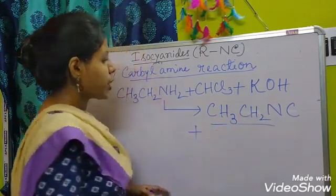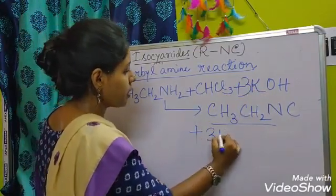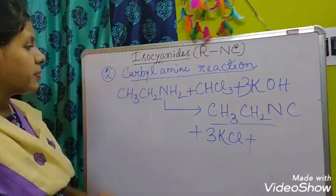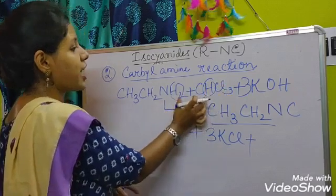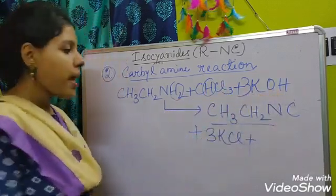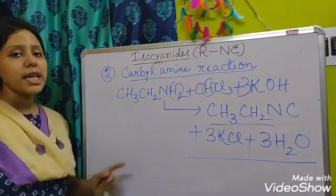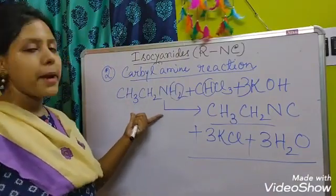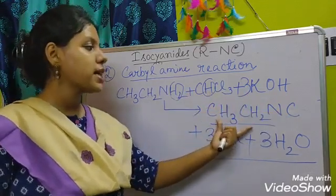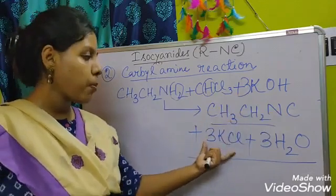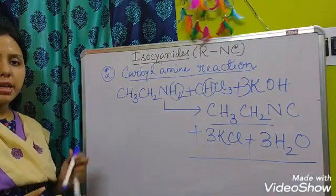The co-products are 3KCl and 3H₂O. After the carbylamine reaction, starting from the primary amine and the alkaline solution of chloroform, it produces the pungent-smelling isocyanide, potassium chloride, and water. This was the second method, known as the carbylamine reaction.